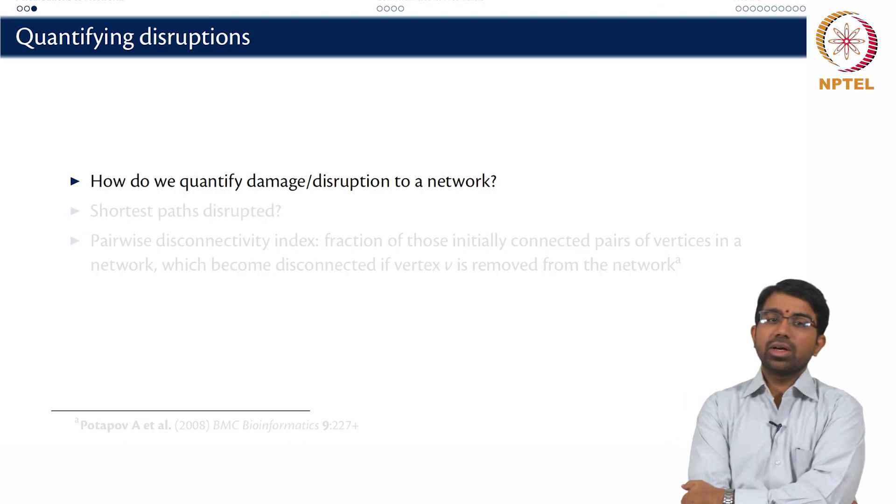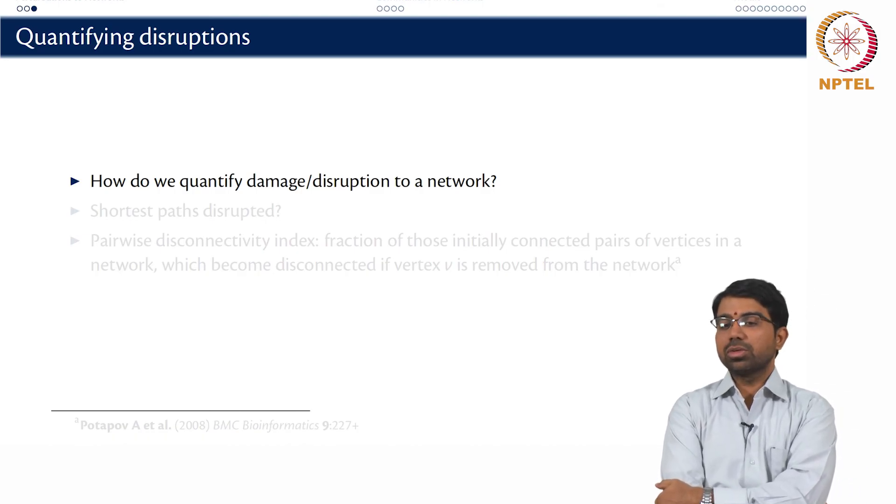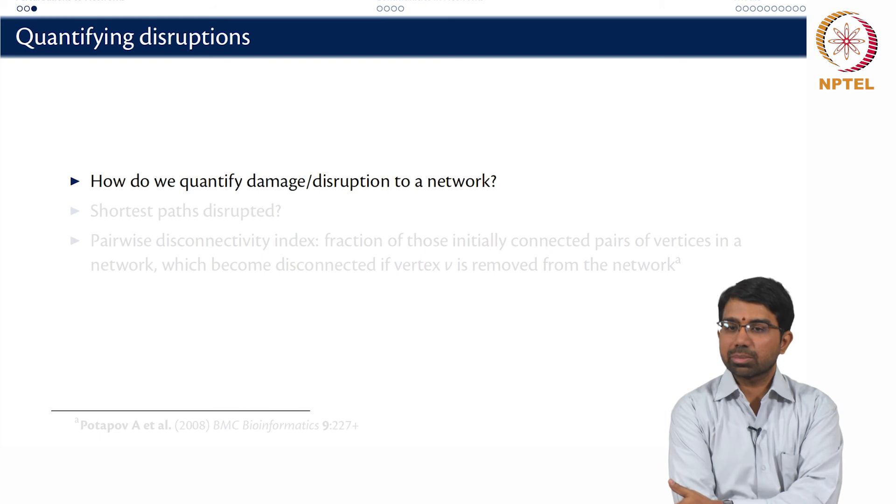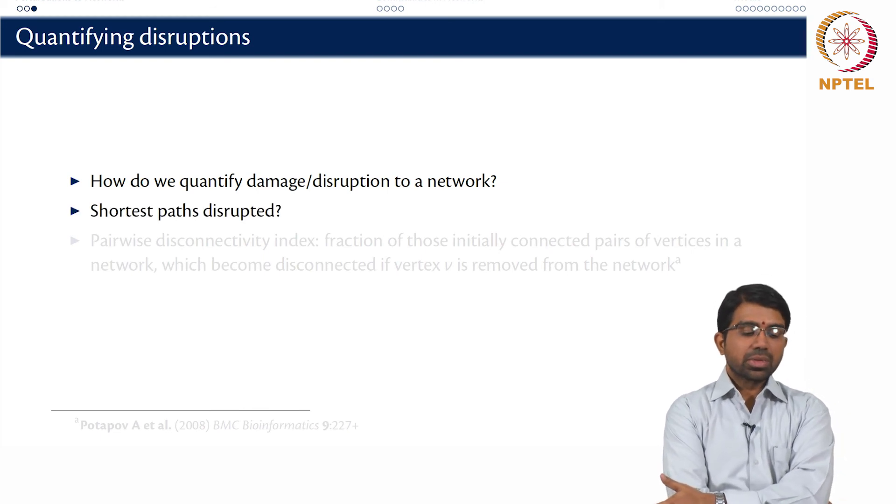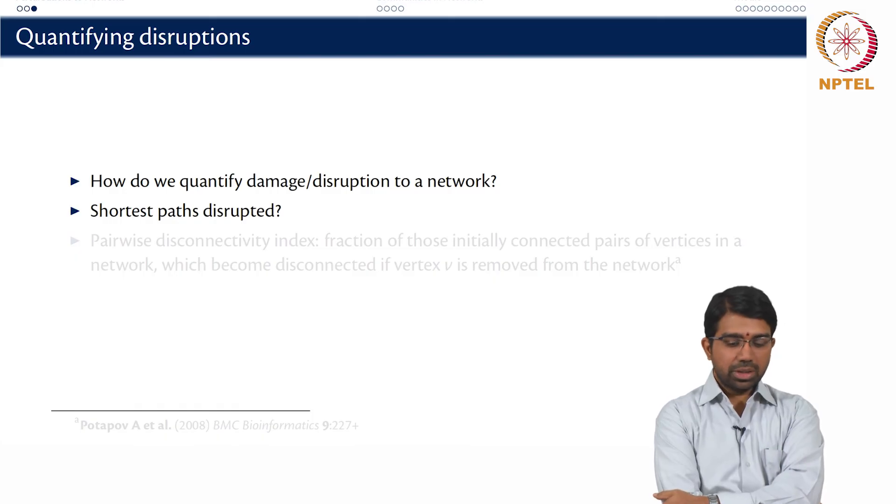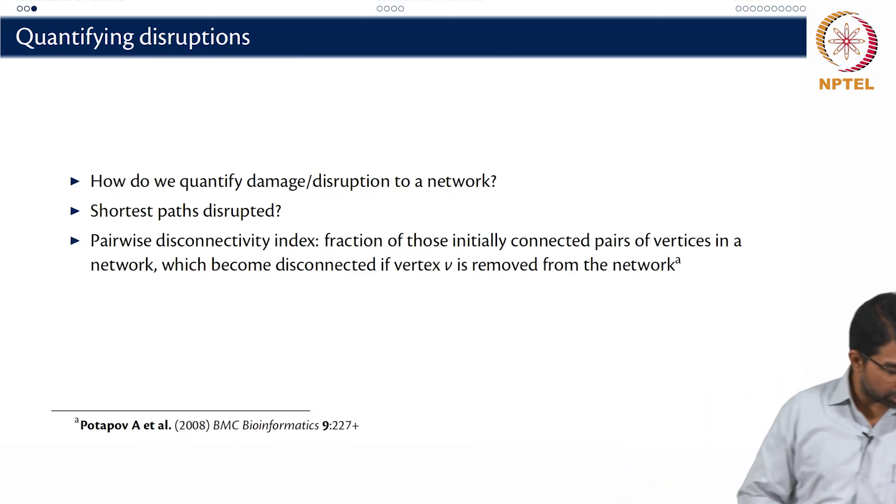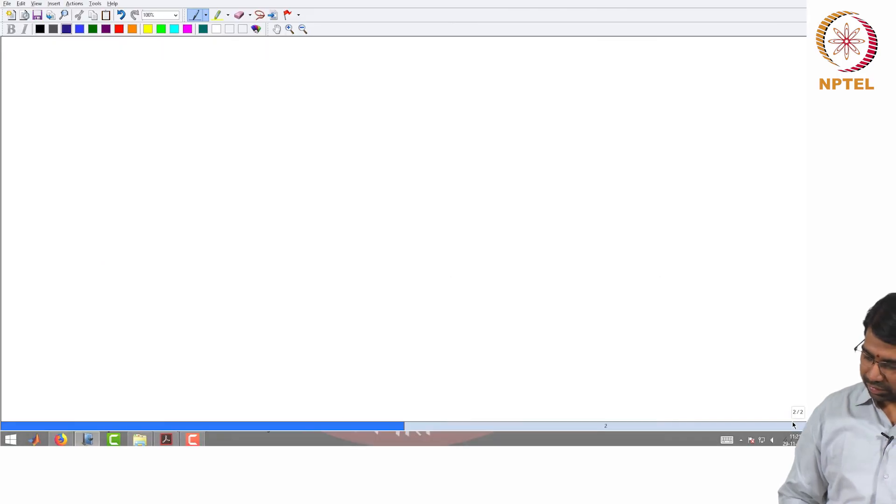So how do we quantify the disruption? One way of quantification would just be computing a delta characteristic path length, delta diameter or something like that. You could also look at the number of shortest paths disrupted. There was another method that was proposed called pairwise disconnectivity index.